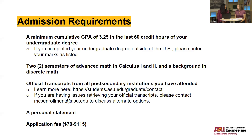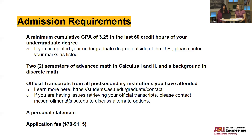You can apply with unofficial transcripts, but they must be legible and all in one document. You do eventually need to send officials if admitted. We also require a personal statement — about a page or two explaining why you want to do the program, what you hope to get out of it, and what you hope to contribute. There is also an application fee ranging from $70 to $115 depending on whether you're a domestic or international applicant.